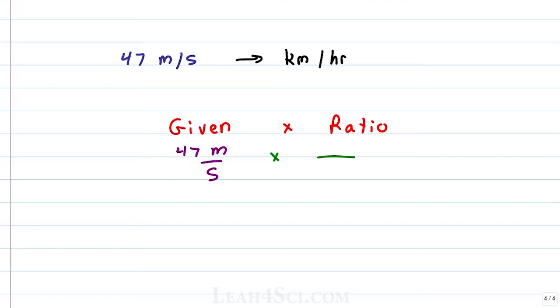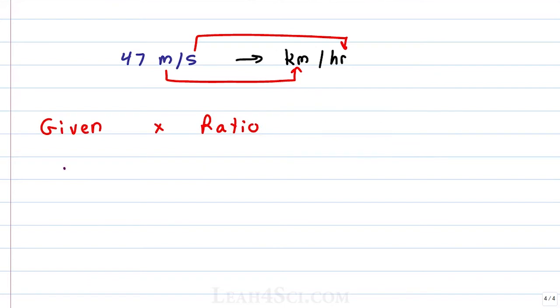So when you have multiple conversions, just treat it as one conversion at a time. Going from 47 meters per second, we're really trying to convert meters to kilometers and we're trying to convert seconds to hours, and so we just take the steps to go from one to the next to the next as a given times the ratio times another ratio times another ratio. Starting out with 47 meters per second, let's choose meters to convert first.